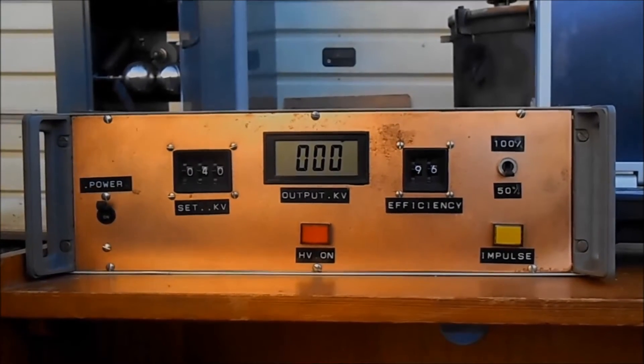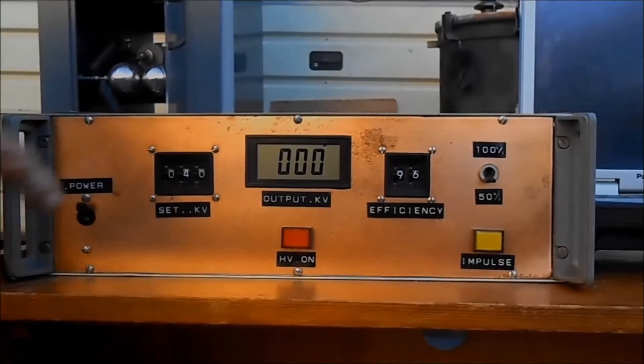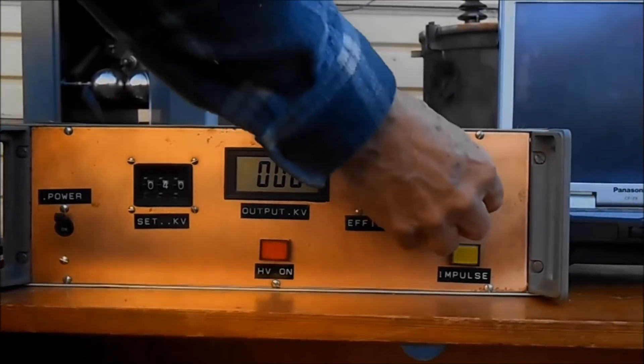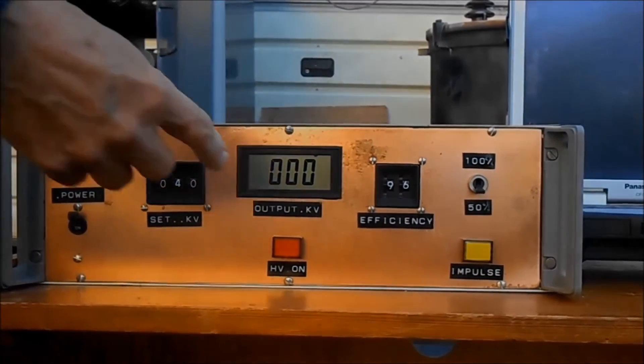We turn on the impulse generator. On a smart controller we set the impulse level 40 kV. It's a reduced wave, 50% coming first.